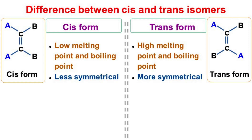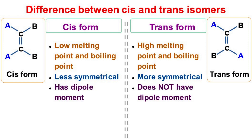The cis isomer is less symmetrical, whereas the trans isomer is more symmetrical. The cis isomer has a particular dipole moment, whereas the trans isomer does not have any dipole moment.